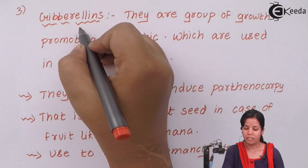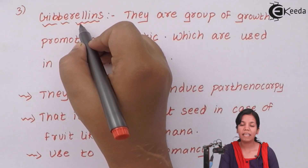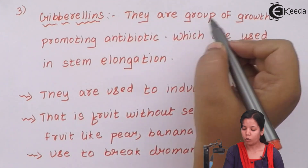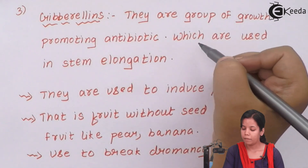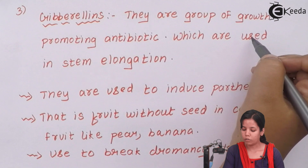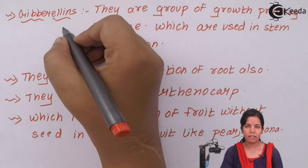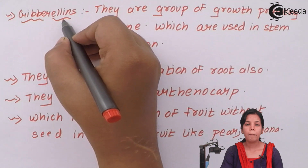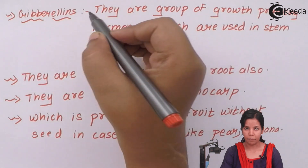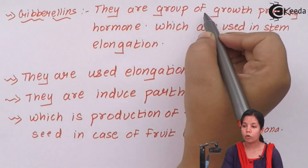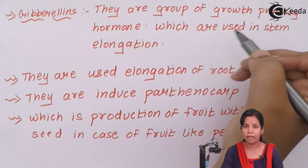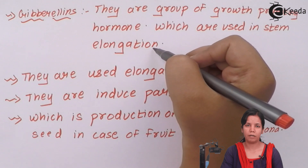The third bioactive agent is gibberellins. Gibberellins are basically plant growth hormones. They are a group of growth-promoting hormones used in stem elongation. They are naturally present in plants and help in stem elongation, and are also available commercially.